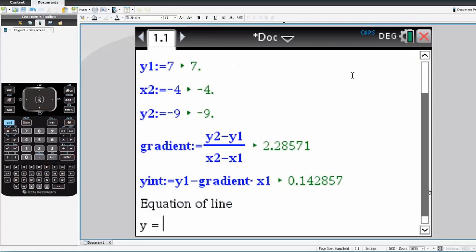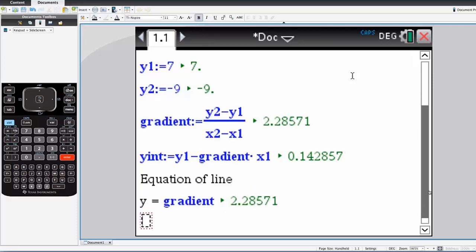We finish off by just getting a prettier version of that, which has it in the form that you might want. So I'm just saying y is equal to the gradient. And I'll put a text box, or just text x plus, and then I'll do the y-intercept.